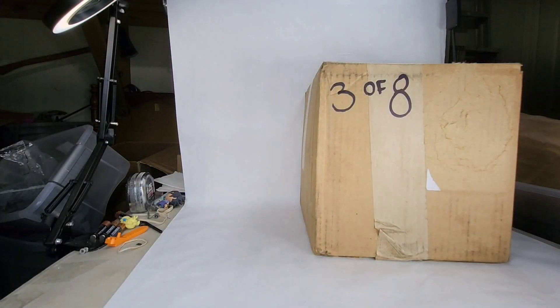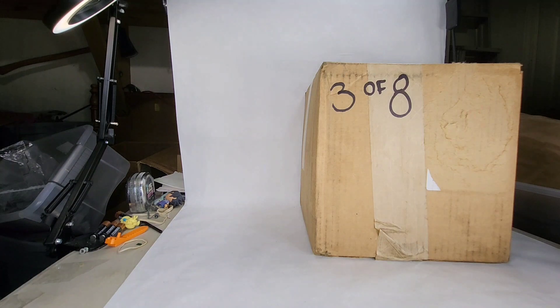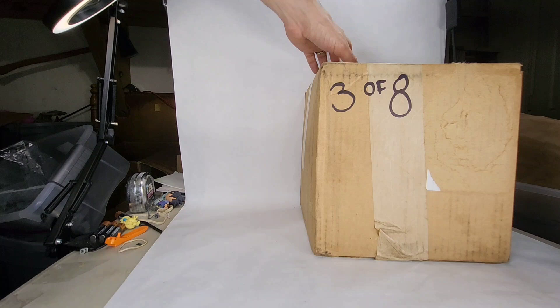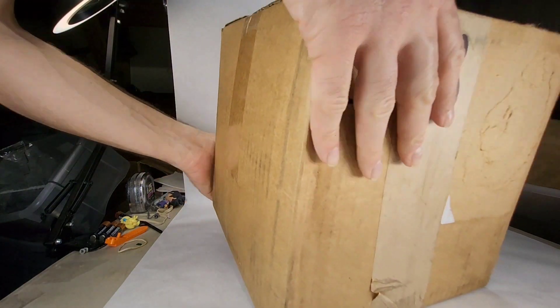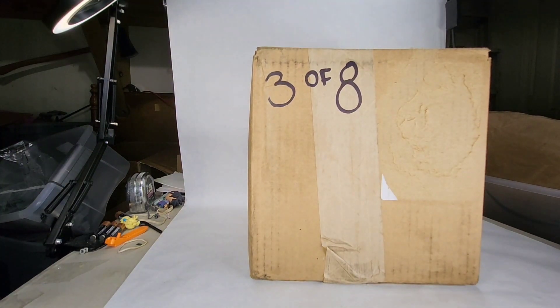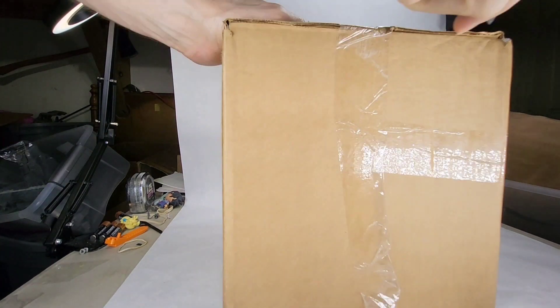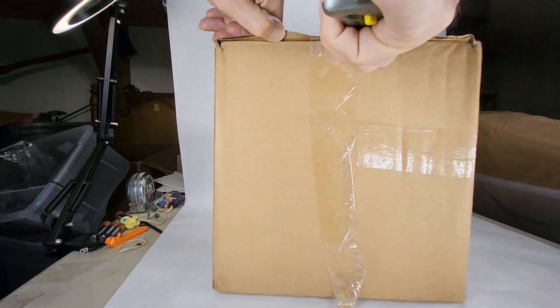I've already opened two, this will be the third. So let's get into it. And here we are, box three out of eight, two down, six to go. See how much this one weighs real quick. This one's showing five pounds, 15 ounces, almost six pounds. That box is going to add some weight to it. All right, let's crack it open.